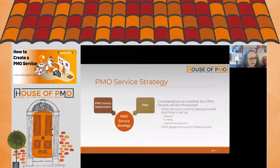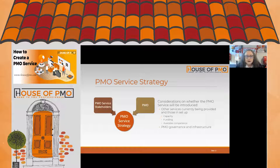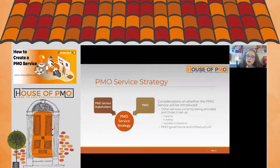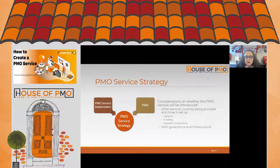To pull together a service strategy, we need good stakeholder engagement — identifying the key service stakeholders. These range from senior management and executives at the portfolio level, to project and programme managers, delivery teams, and business-as-usual managers who want to understand when changes are coming. We also have to recognize that at some point we'll need to prioritize services, because no PMO has an infinite budget or infinite staff.